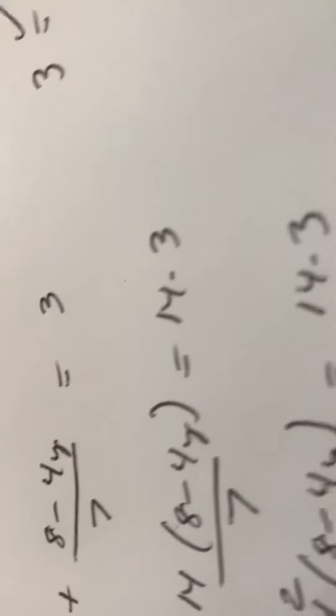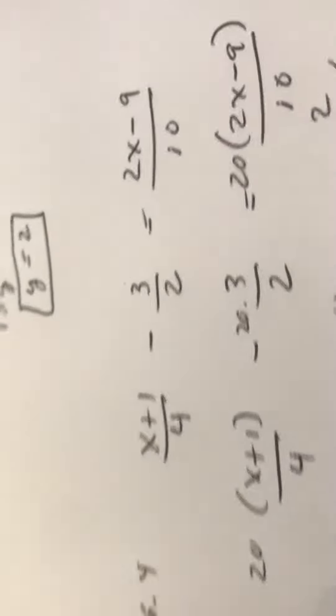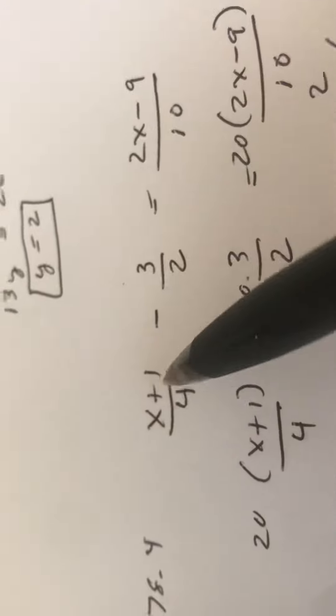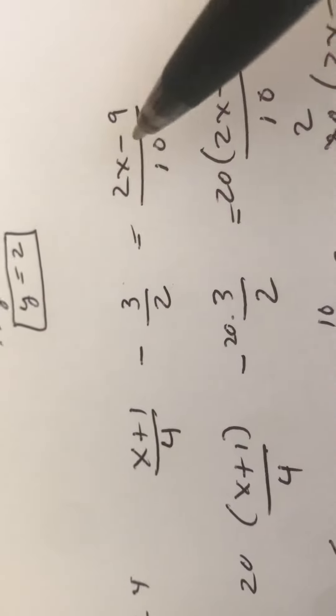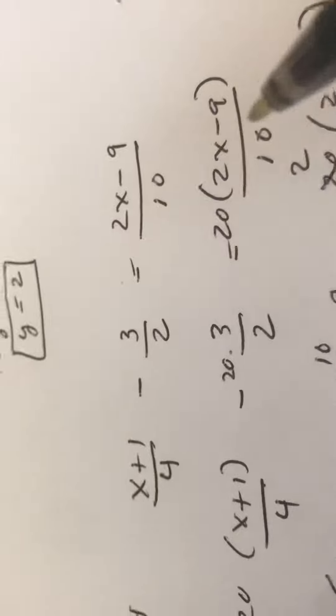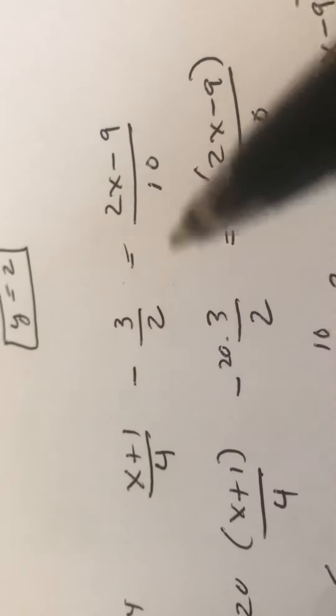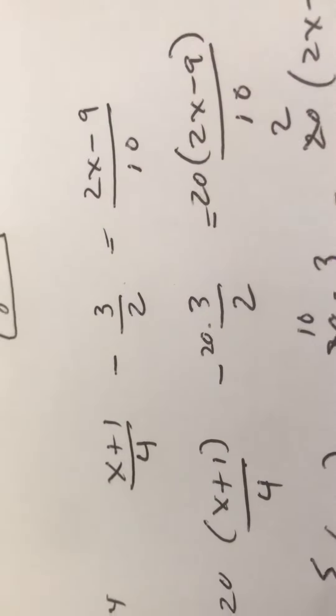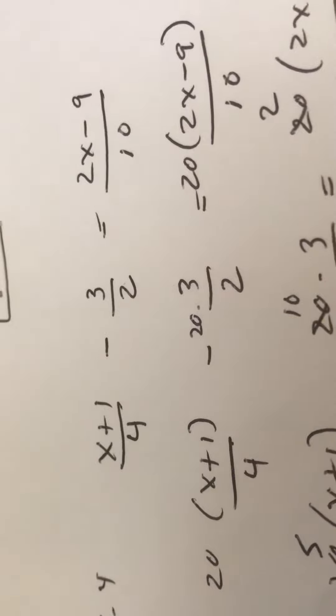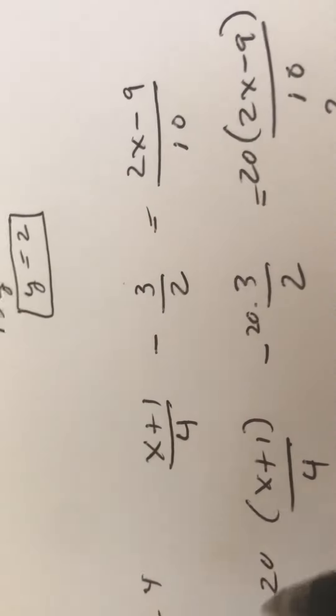You can check your answers, you can't get these wrong. Finally, the last example. They have two numerators with more than one, so I put them both in parentheses. And then 4, 2, and 10, the smallest number they all go into is 20, so I multiply each term by 20.